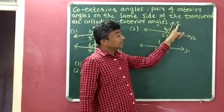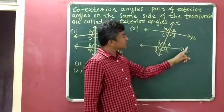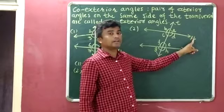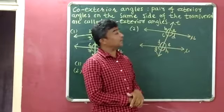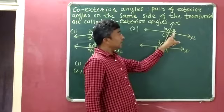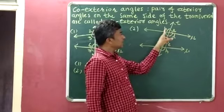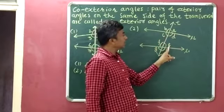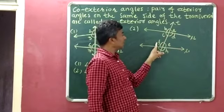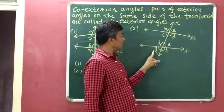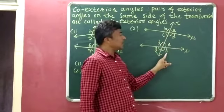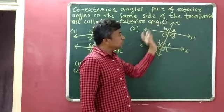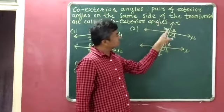In figure number 2, line T is the transversal of line L1 and line L2, and 8 angles are formed: angle A, angle B, angle C, angle D, angle E, angle F, angle G, and angle H.